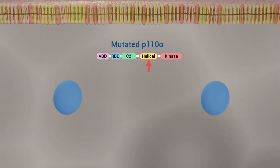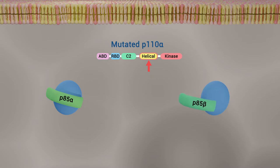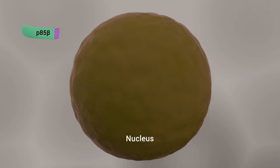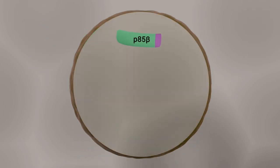P110 alpha helical domain mutations alleviate the inhibitory interaction between P110 alpha and the N-terminal SH2 domain of P85 alpha and beta. In this paper we report that P85 beta, but not P85 alpha, disassociates from P110 alpha helical domain mutant protein and translocates into the nucleus in cancer cells through a nuclear localization sequence, thereby promoting tumor growth.